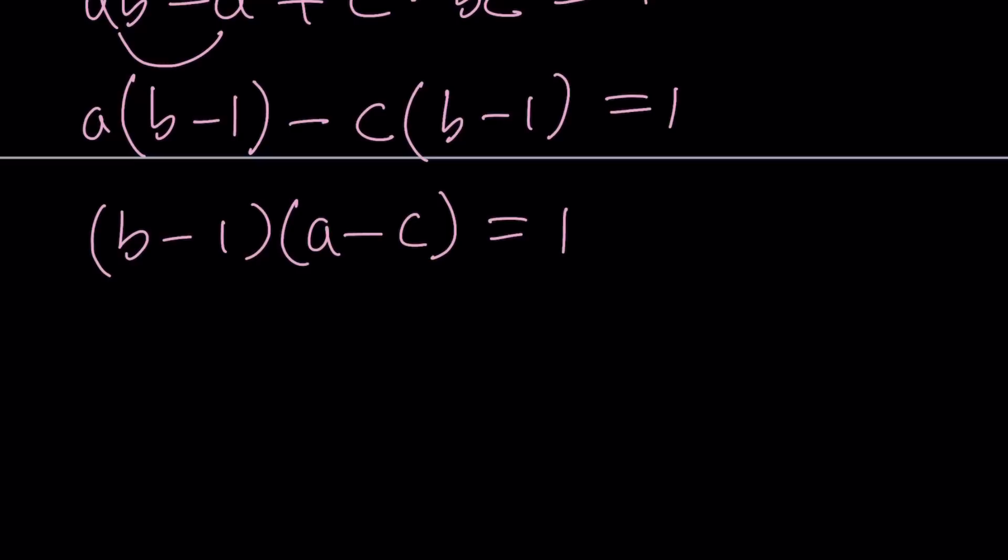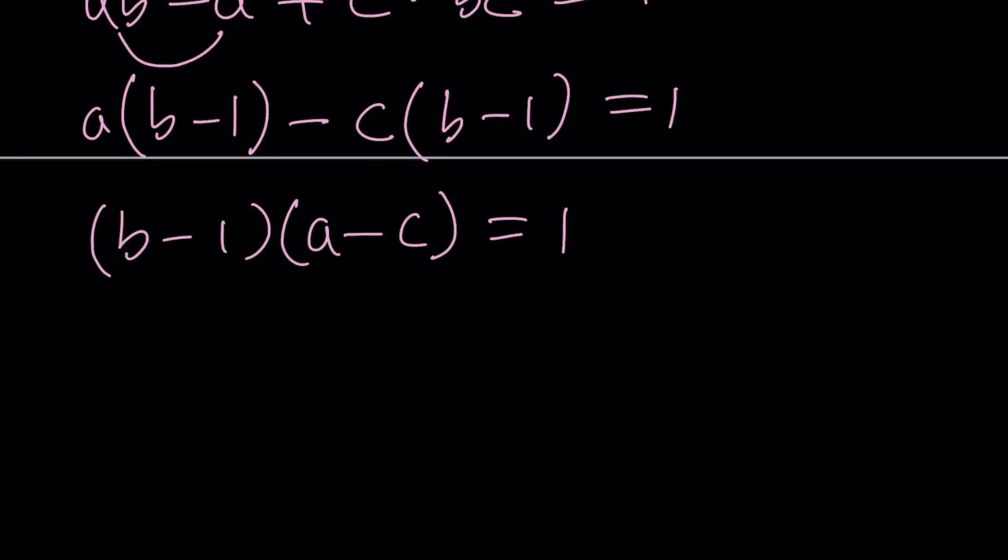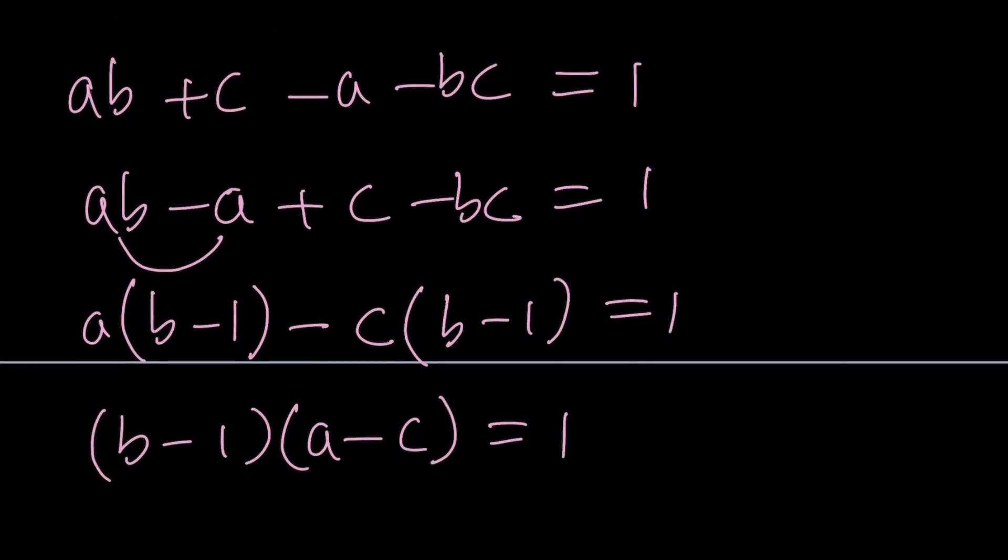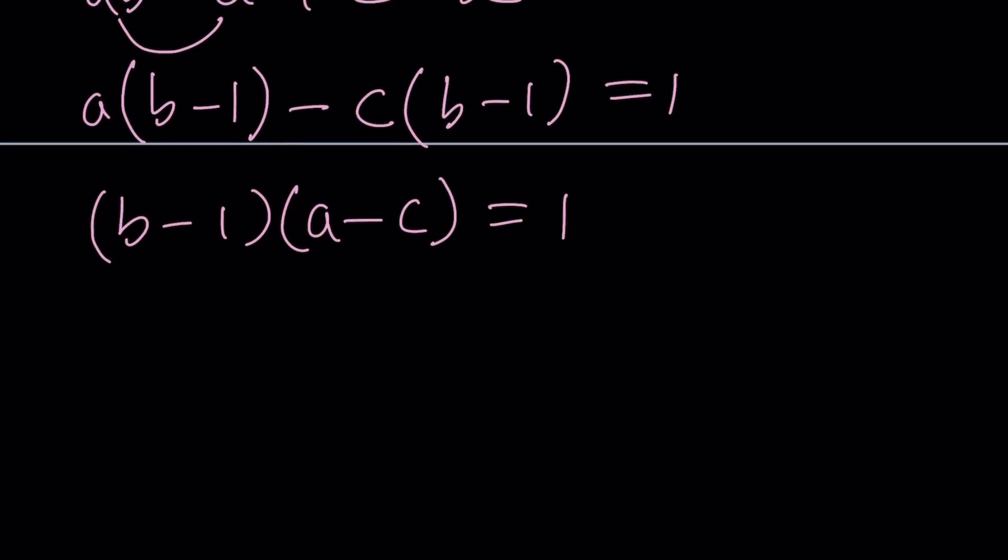Let's go ahead and take a look. Here's what we got. And the product is equal to 1. That's a nice thing. Why? Because 1 can only be factored into 1 times 1 or negative 1 times negative 1. Why so? Can't you do 2 times 1 half? Well, if A, B, C are integers, then it's not going to happen. Because the difference of 2 integers cannot be a fraction. Obviously, if one of them is an integer, then the other one isn't. So, what do we do? We look at both cases.